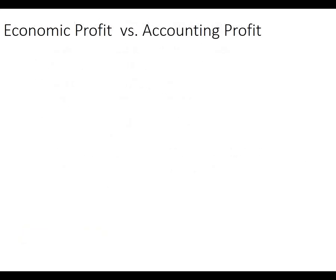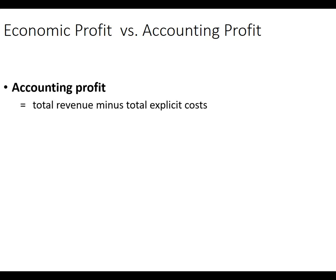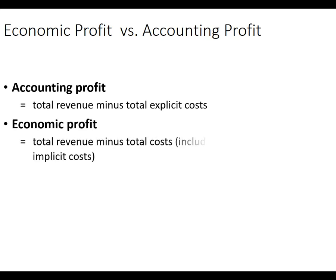This leads us to economic profit versus accounting profit. Accounting profit is total revenue minus the explicit costs — that's what Facebook's income statement shows us. Economic profit is total revenue minus both explicit and implicit costs. So we also make a calculation about what else the company could be doing.